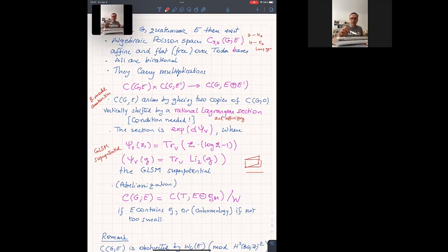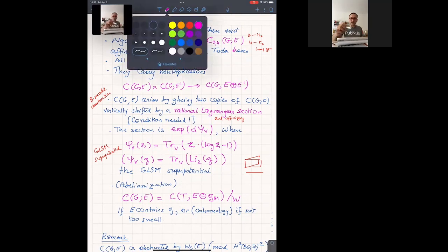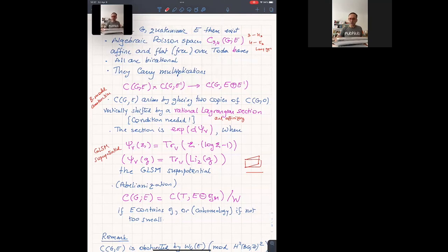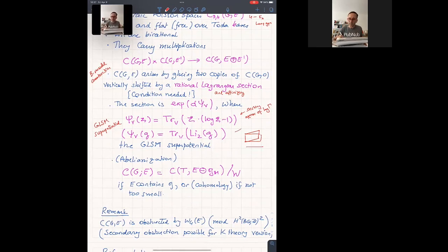All right. Moreover, this section is something that was known in physics a long time ago. It's the exponential of the differential of the superpotential for the gauge linear sigma model. So this is a GLSM superpotential for the representation V for half of E. And there are traces of a function of psi log psi minus one, and of a dilogarithm in the K-theoretic case. And I should say that this is the Stirling asymptotics of the gamma function, of log of the gamma function. Stirling, which is meaningful. And same for the q-gamma function, Jackson q-gamma.